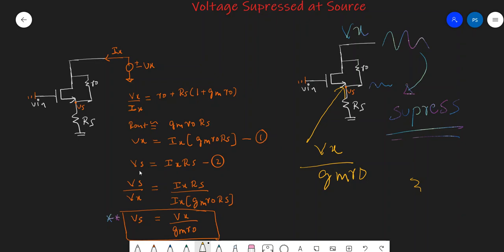And what is the source voltage? The source voltage is the voltage at this point, which is nothing but the current through this resistance multiplied by the resistance R_S. That is I_x times R_S. So your source voltage will be I_x times R_S. Let us call it equation 2.